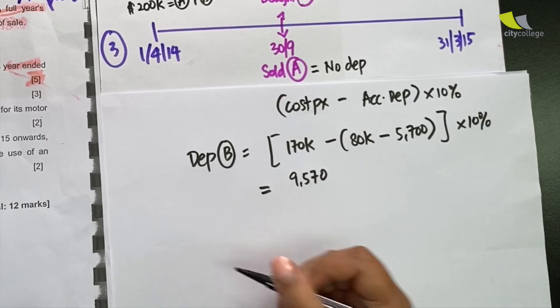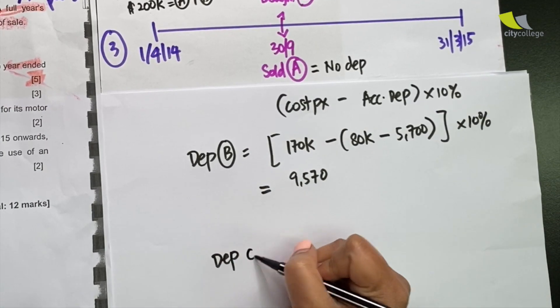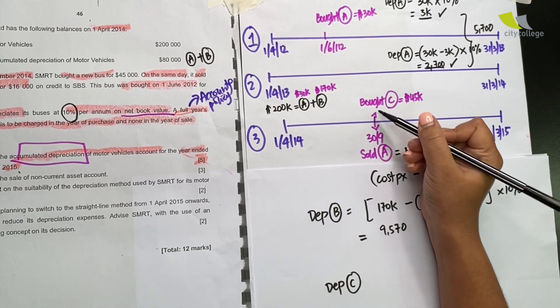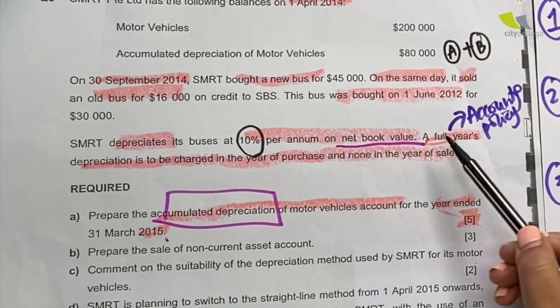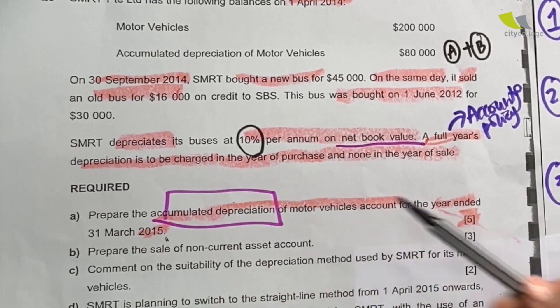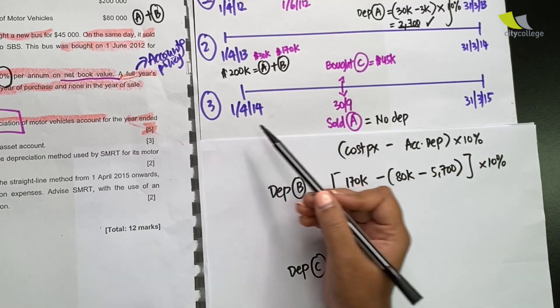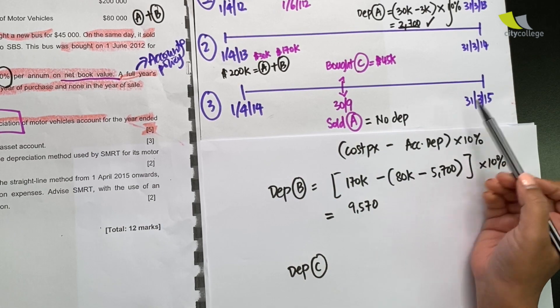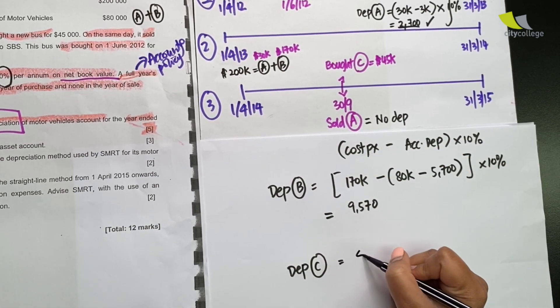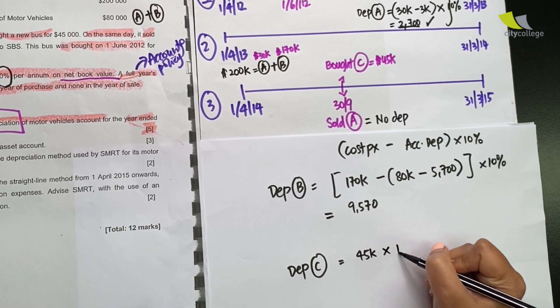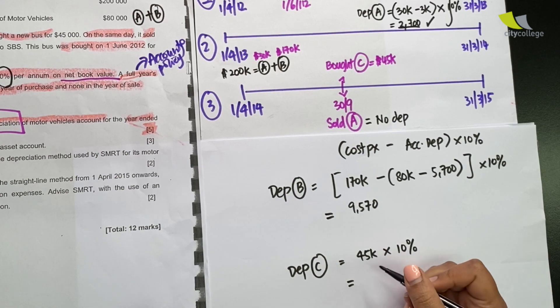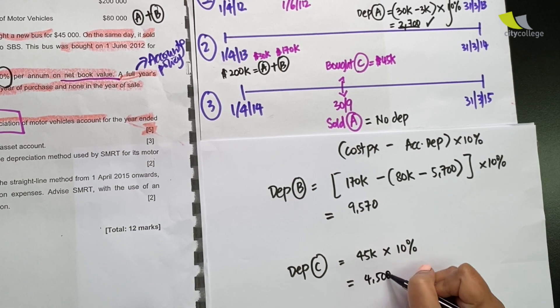Next, let's calculate the depreciation for C. C was bought in the third year. Although it was bought midway, the question says give a full year's depreciation in the year of purchase. For C, the year of purchase is the third year. So even though it's bought midway, just allocate a full year's depreciation. So that will be $45,000 times 10% which would give us $4,500.